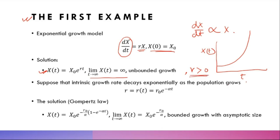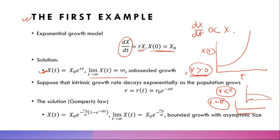When r is less than 0, the population goes to extinction. When r is equal to 0, the population remains constant. Mathematical biologists understand that when a parameter changes, drastic changes in the dynamics occur — this is called a bifurcation. At r = 0, bifurcation is happening, and there is a drastic shift in population dynamics.